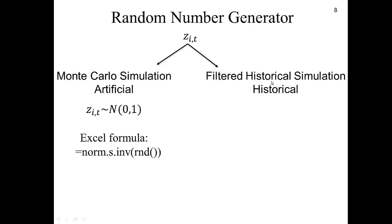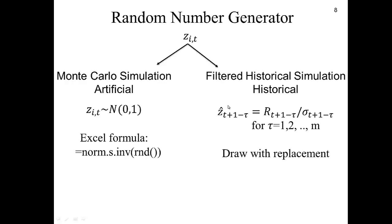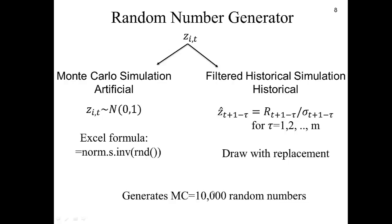The second methodology is filtered historical simulation. Here, we standardize all the returns by their volatility from a model such as GARCH or realized variance. The standardized returns have mean 0 and standard deviation close to 1. We have about 500 historical returns, and we draw with replacement from these returns to generate our scenarios. We can generate 10,000 random numbers even if we only have 500 historical returns, because of the draw with replacement.